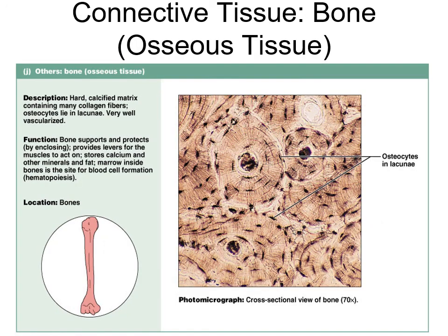Bone - connective tissue - has a unique arrangement. Looking at a cross-section of compact bone, it's made up of many circular structures that look like tree cross-sections. This structural-functional unit is called the osteon. In the center of the osteon is the central canal, through which runs an arteriole, a venule, nerves, and lymph vessels.